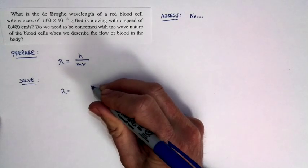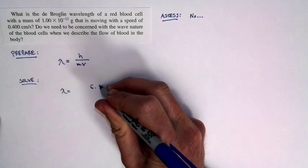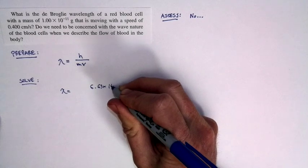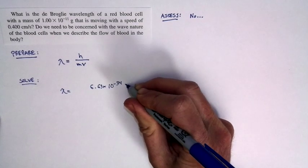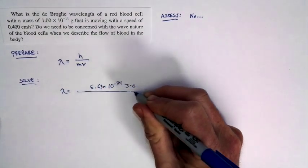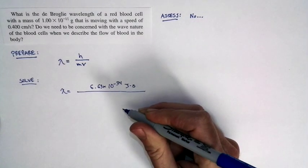The wavelength is equal to Planck's constant, which is 6.63 times 10 to the negative 34th joule-seconds, divided by the product of the mass times the speed.